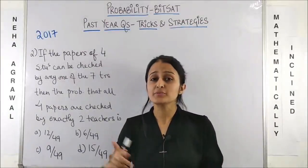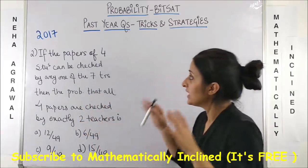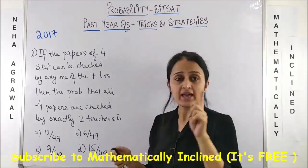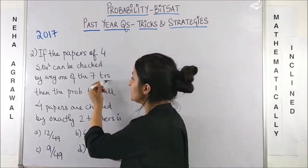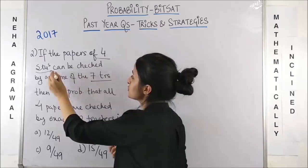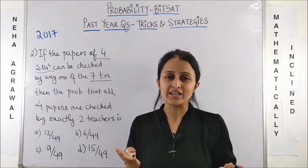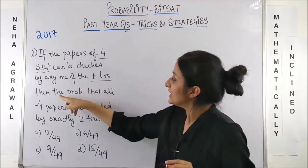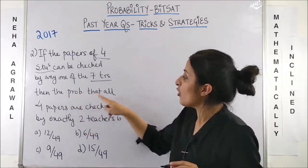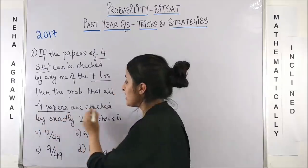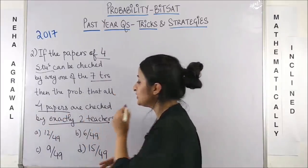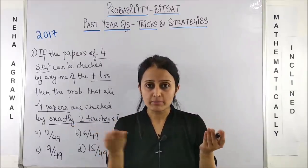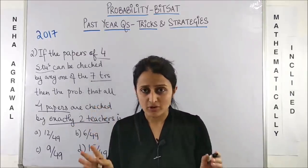Let's check out the question which came in 2017. If all the papers of 4 students can be checked by any one of the 7 teachers. Okay, so 4 students and 7 teachers. I know I am very lazy to write the words in full. Then the probability that all 4 papers are checked by exactly 2 teachers is what? Well, first of all, let's find out what is the base. That means the total possibility.